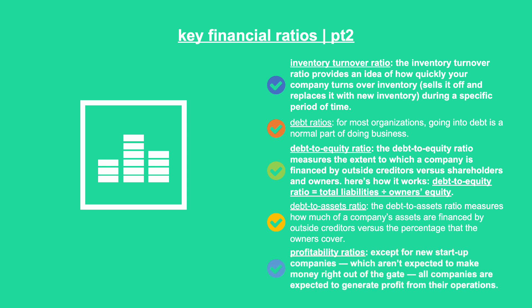Profitability ratios: except for new startup companies, which aren't expected to make money right out of the gate, all companies are expected to generate profit from their operations. The more profit you generate, the merrier your owners, shareholders, or investors will be. Profitability ratios indicate the effectiveness of management in controlling expenses and earning a reasonable return for shareholders and owners.